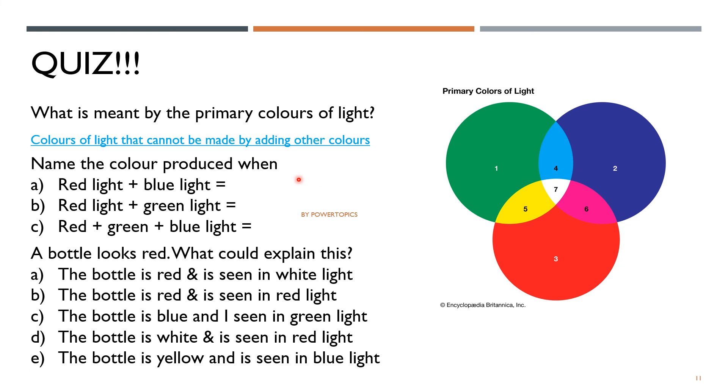Let us move to the third question. A bottle looks red. What could explain this? Number one, the bottle is red and is seen in white light. Number two, the bottle is red and is seen in red light. C, the bottle is blue and is seen in green light. D, the bottle is white and is seen in red light. E, the bottle is yellow and is seen in blue light. So A is correct, B is correct, C is incorrect, D is correct.